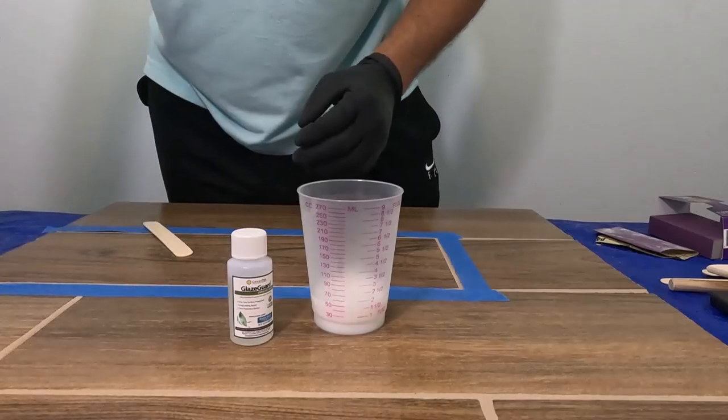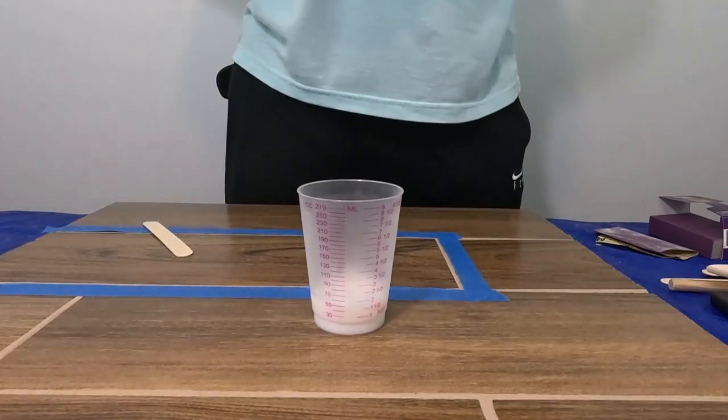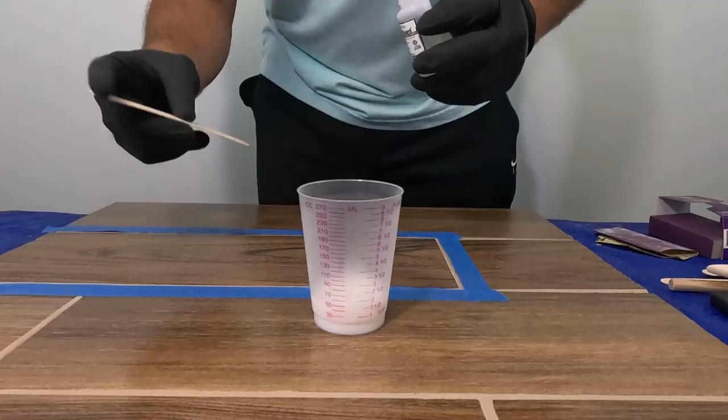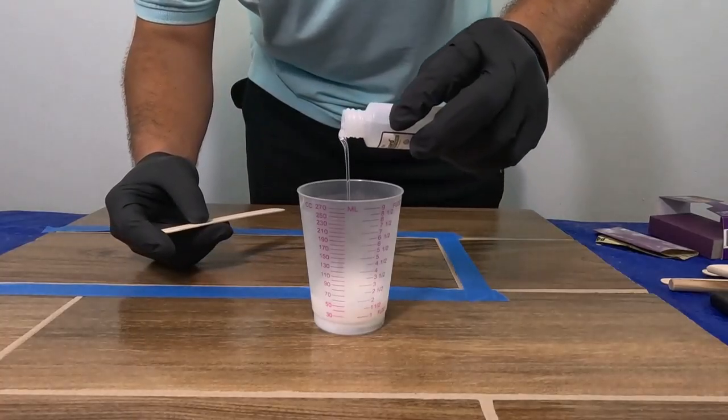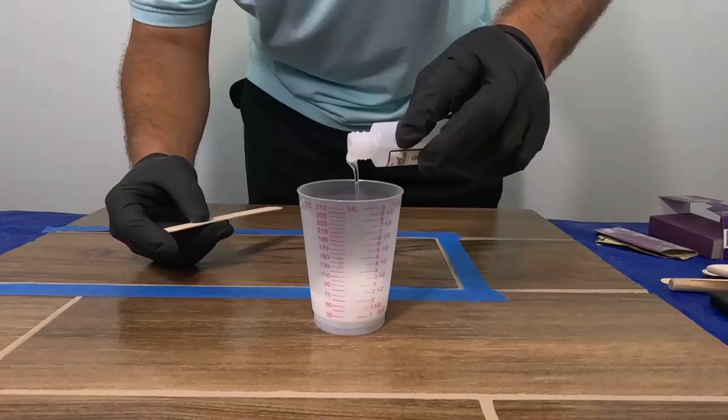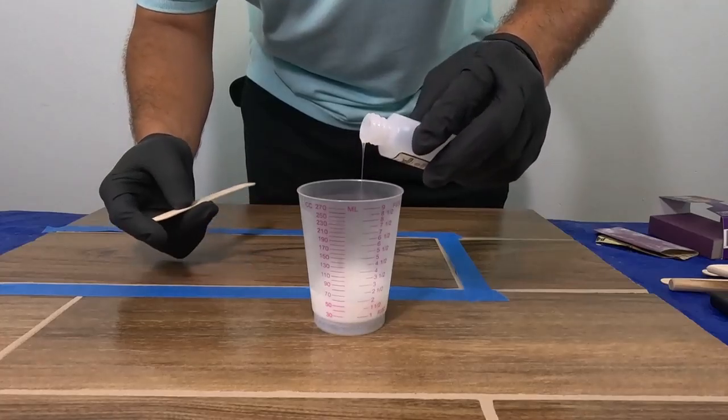Make sure you're mixing in the relevant ratios: three to one if you're using the satin or gloss, two to one if you're using the matte finish.